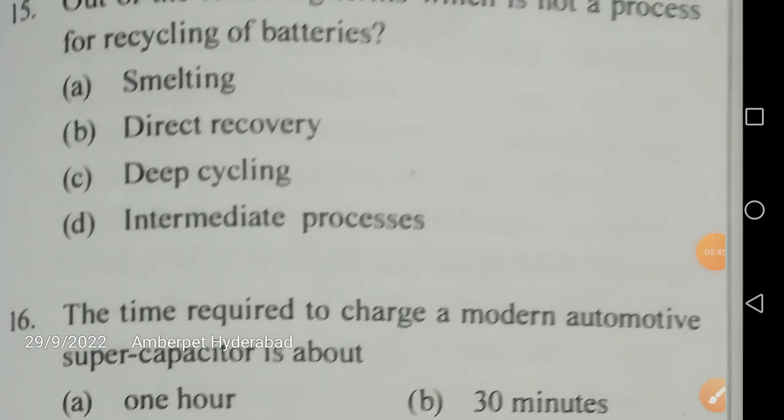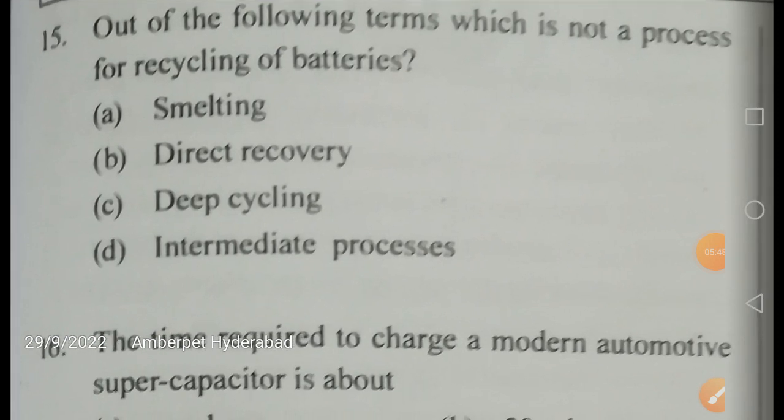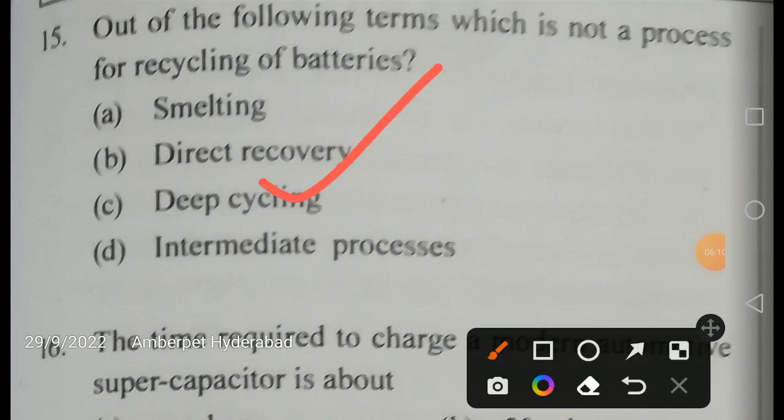Out of the following terms, which is not a process for recycling of batteries — smelting, direct recovery, deep-cycling, or intermittent processes? The correct answer is deep-cycling, as it is not a recycling process for batteries.